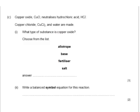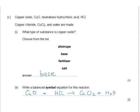Last question. Copper oxide, CuO, neutralises hydrochloric acid, HCl. Copper chloride, CuCl₂, and water are made. What type of substance is copper oxide? It's reacted with an acid to make a salt and water only, so it must be a base. Now write a balanced symbol equation: CuO plus HCl gives CuCl₂ plus H₂O. Looking at the balancing, there are two Cls on the right-hand side but only one on the left, so we put a 2 in front of HCl — and that also solves the issue of having two hydrogens on the right. We now have two on the left. That's balanced.